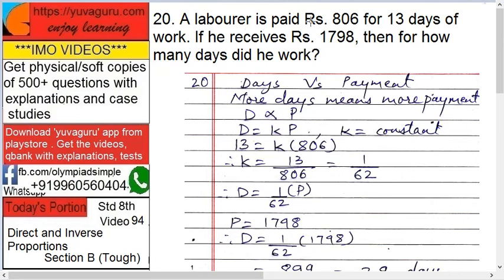A laborer is paid 806 rupees for 13 days of work. If he receives 1798 rupees, how many days did he work? This is a direct proportion problem — more days means more payment, so days D is directly proportional to payment P.